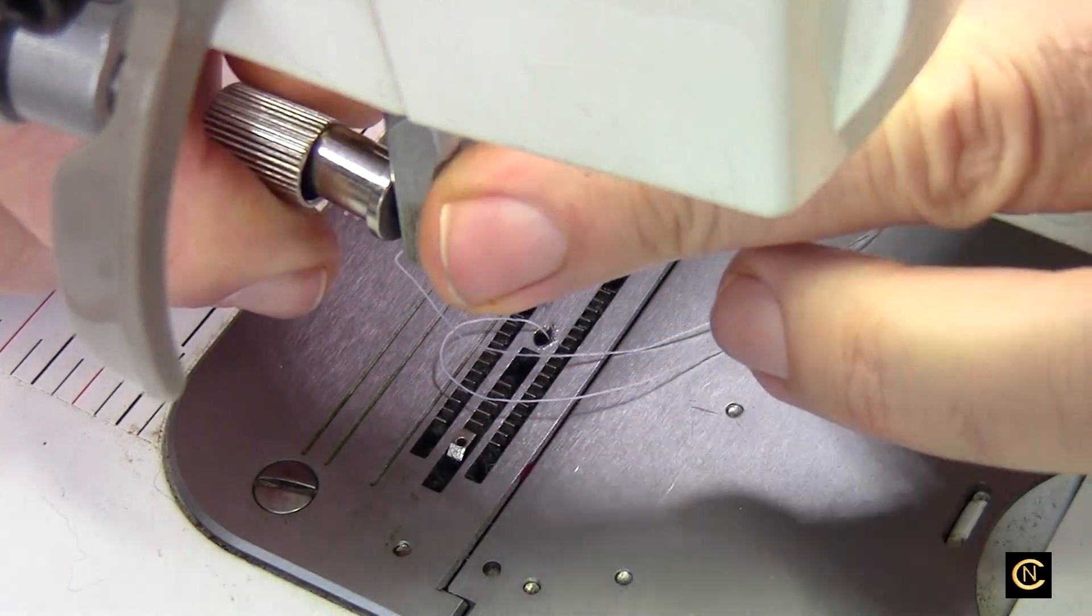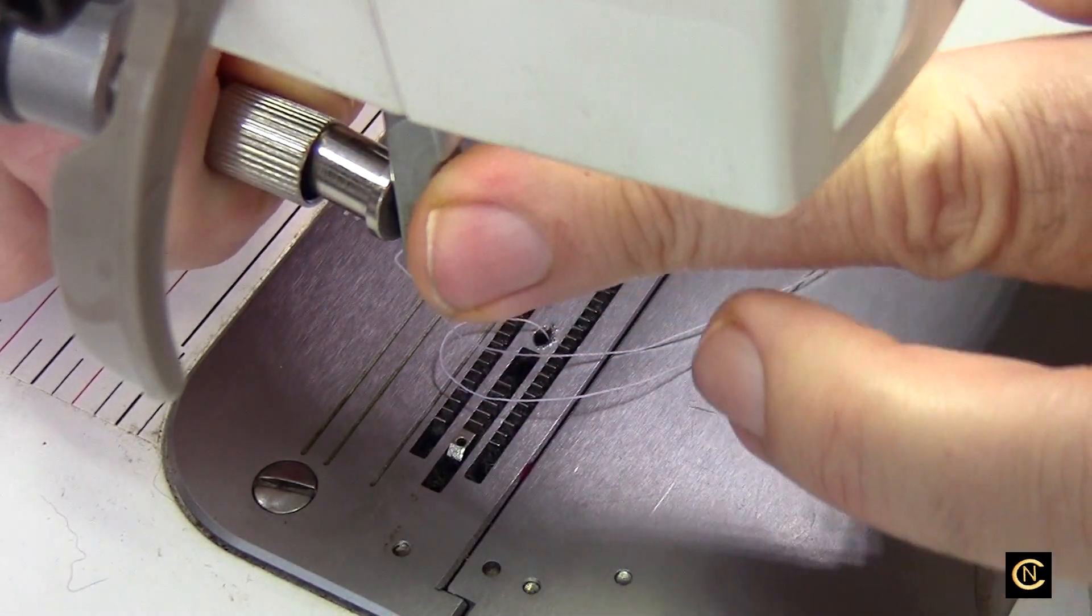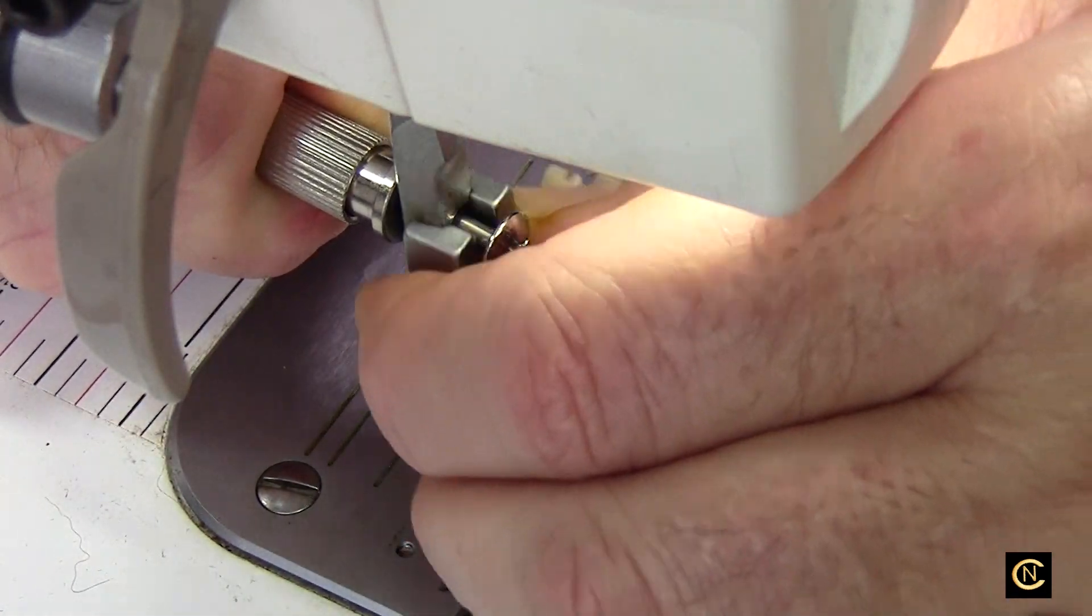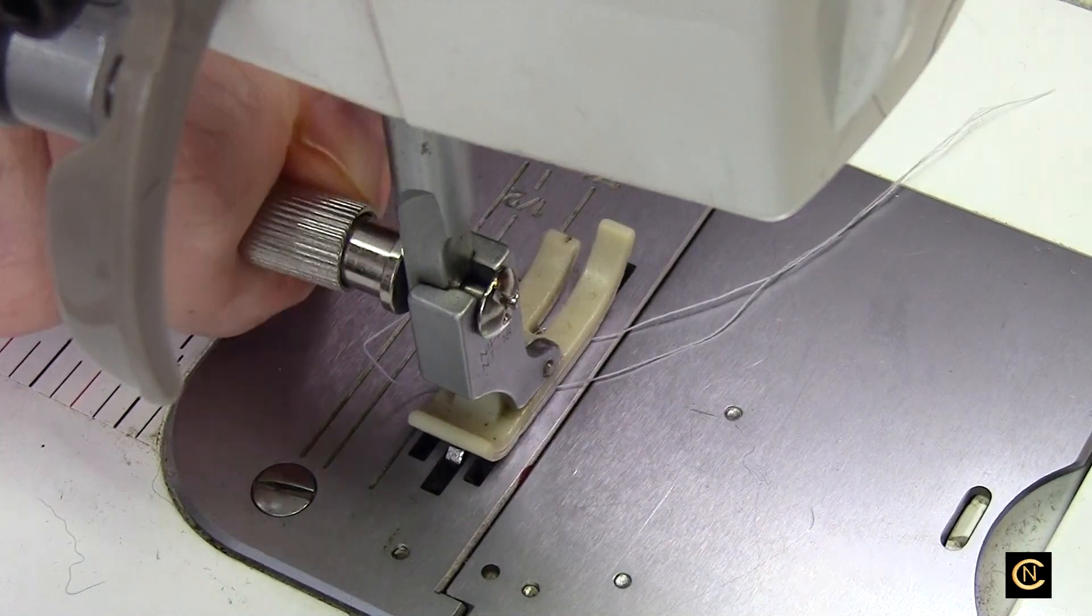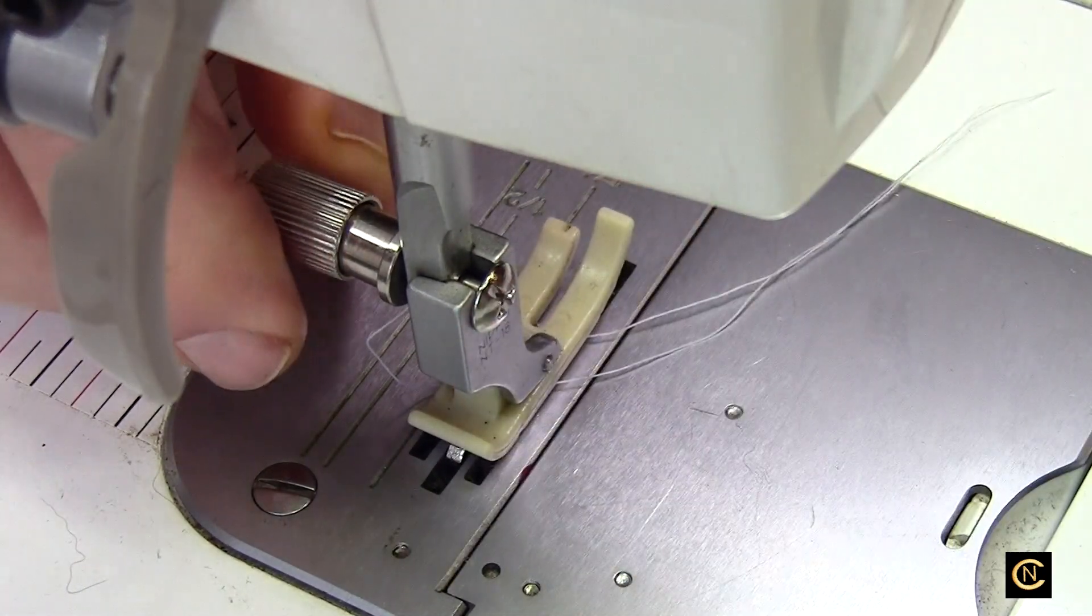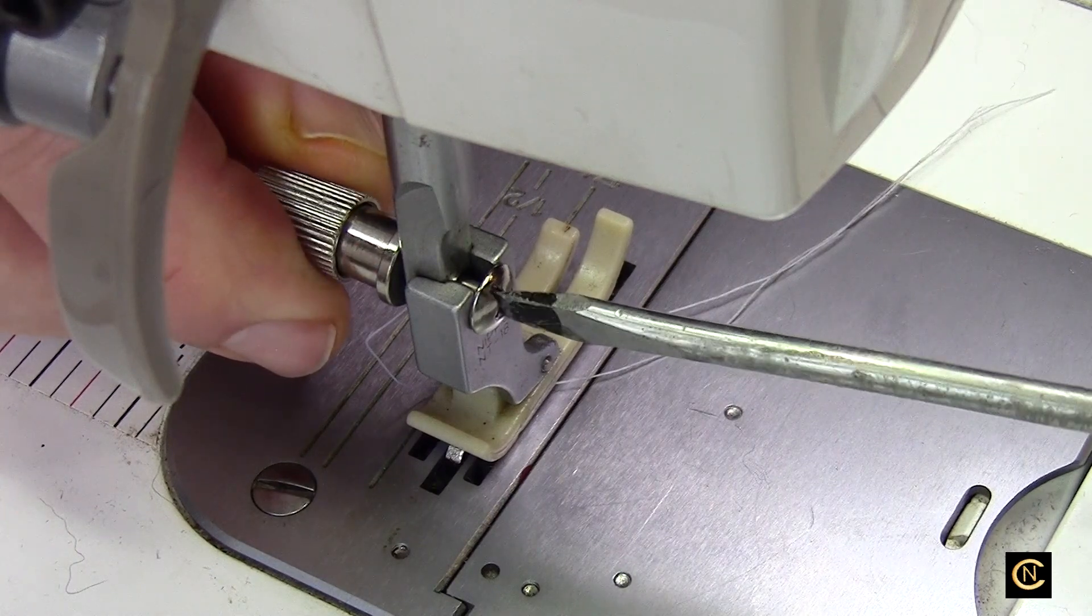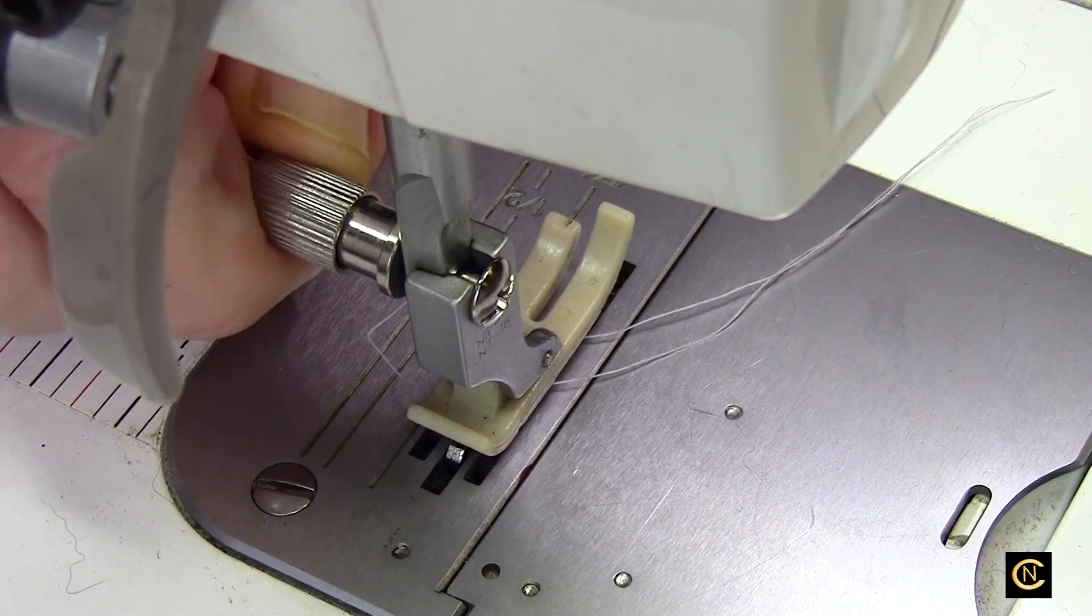You want to make sure it's snug, so just hold this back here—this cap—and screw this a little bit just to make sure it's nice and snug. You're going to have a little play because of the spring, but you don't want this too loose.